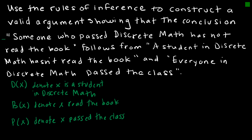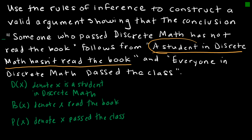Let's write the premises in predicate logic. 'A student in discrete math hasn't read the book' means there exists a student, so: there exists x such that D(x) and not B(x) — a student is in discrete math and they have not read the book. If it's a negation, I have to use that negation, so not B(x).